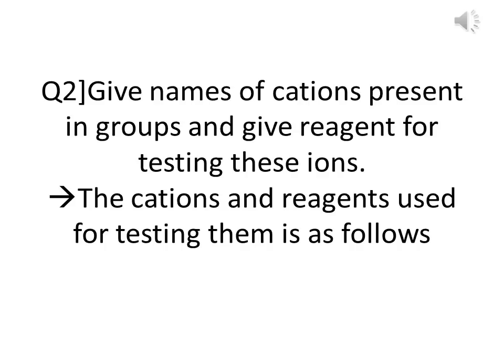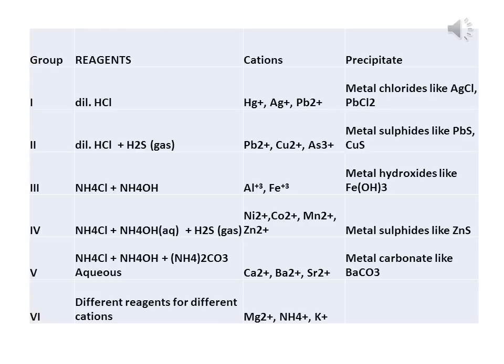The cations and reagents used for testing them are as follows. This is a very important part of salt analysis — you have to remember the group number and the cations present in each group. These groups are classified on the basis of solubility product (Ksp) value. The salt which has a lower solubility value comes first, placed in Group 1, and salts with higher solubility values come after, arranged in increasing order of solubility product.